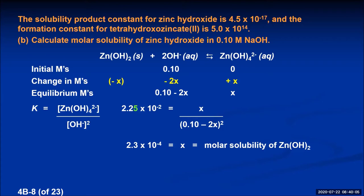This is a higher value than its molar solubility in pure water, which was 10 to the minus 6th. The fact that it forms a complex ion actually allows more of the zinc hydroxide to be soluble.